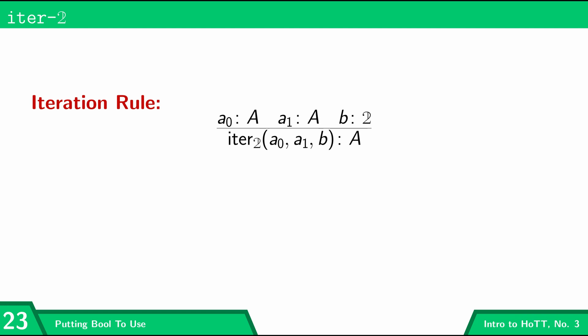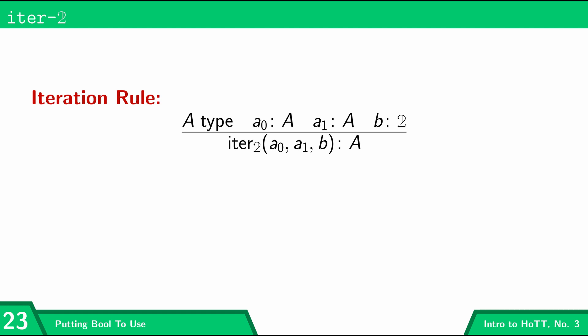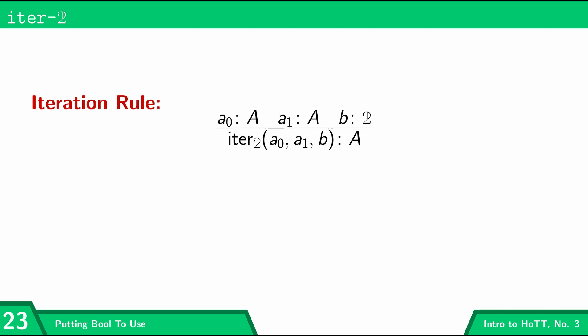This is just exactly what we did in Agda. The iteration rule says I can form this term — and it's worth noting that I'm including as an implicit premise that 'a' is a type, so whenever I write 'a0 as a term of type a' that implicitly says 'a' is a type. The iteration rule allows me to form this term, but it doesn't say anything about how iter-bool actually works. In order to do that, I need the computation rules, and there are two computation rules — one for each of the booleans.